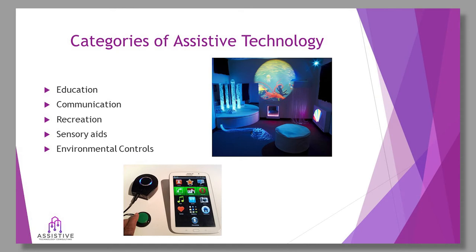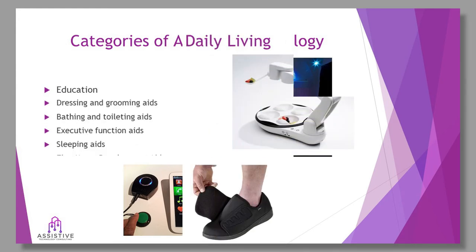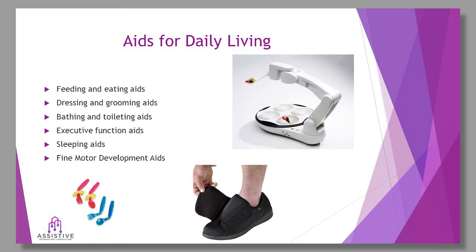We typically don't look at too many environmental controls within the school environment — we usually do those on home assessments. Then you have aids for daily living: how do you feed yourself, what eating utensils work, how do you dress yourself, bathing and toileting. Executive functioning aids address how to organize yourself and your home or school environment. Sleeping aids could be white noise machines, sensory lighting, or special positioning for the bed.